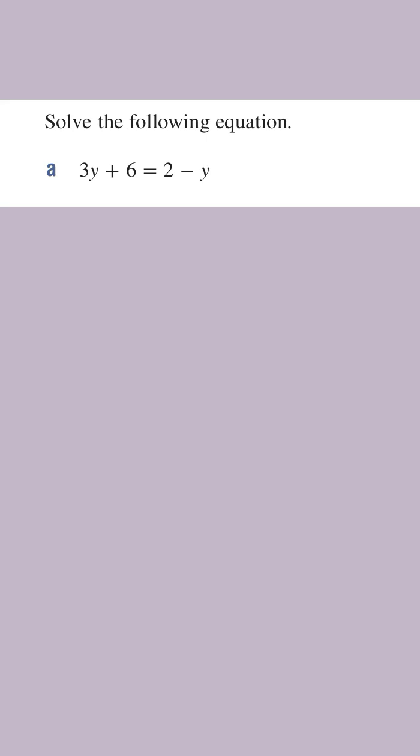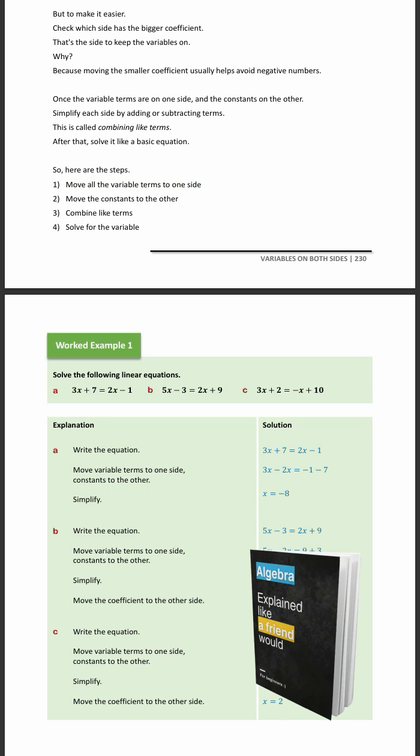How to solve linear equations when you've got variables on both sides. Here are the steps. First, move all the variable terms to one side. Second, move the constants to the other side. Then combine the like terms and solve for the variable.